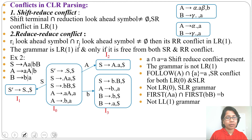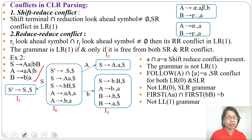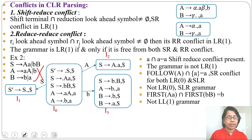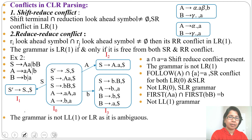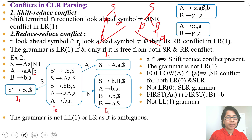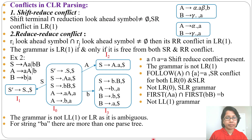The grammar is not LR0, not SLR1, and not CLR1. It is not LL1 either. This is because the grammar is ambiguous — for the input string 'ba', from S you can derive aA then A → b, or derive bB then B → a, giving more than one parse tree. An ambiguous grammar cannot be LL1 or LR. In the next lecture, I will discuss some more examples.